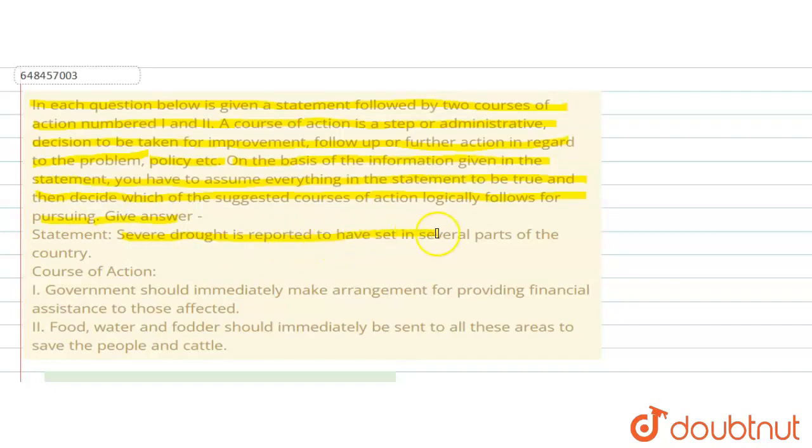drought is reported to have set in several parts of the country. Course of action 1: Government should immediately make arrangement for providing financial assistance to those affected. Second course of action: Food, water, and fodder should immediately be sent to all these areas to save the people and cattle. Four options are given.